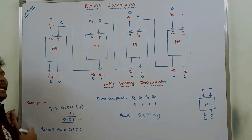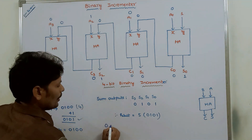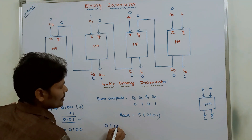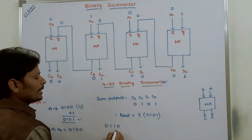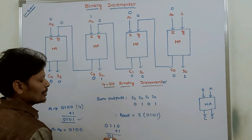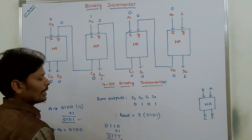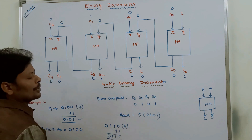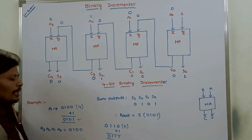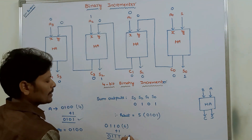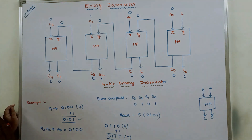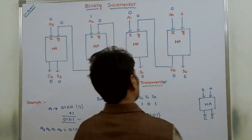For another example, suppose 0110 is stored in register A. The binary incrementer adds 1 and produces 0111. The decimal equivalent of 0110 is 6, and after adding 1 we get 7, which is 0111 in binary. In this way the 4-bit binary incrementer works.